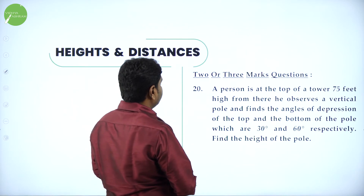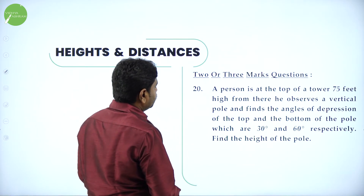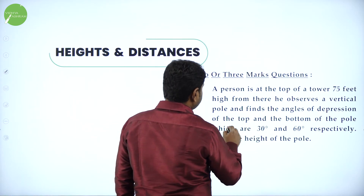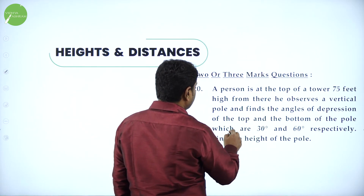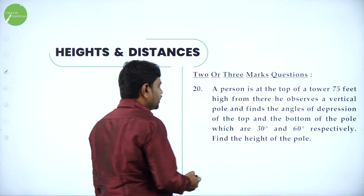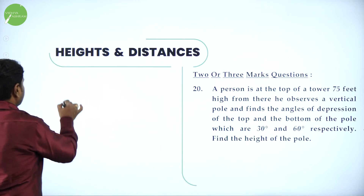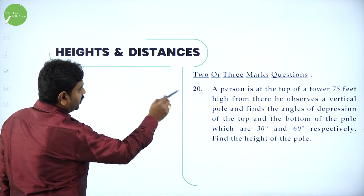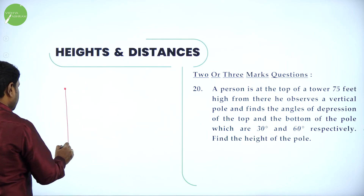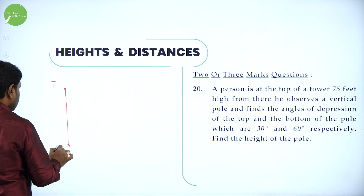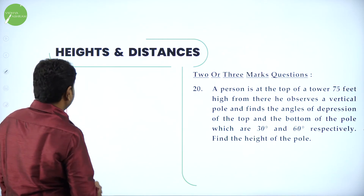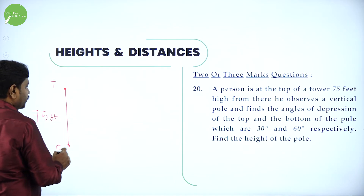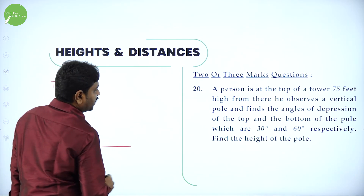Next problem: A person is at the top of a tower 75 feet high. From there he observes a vertical pole and finds the angle of depression of the top and bottom of the pole to be 30 degrees and 60 degrees respectively. Find the height of the pole.